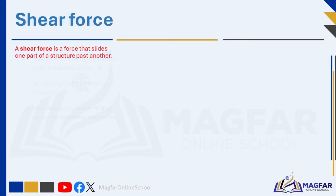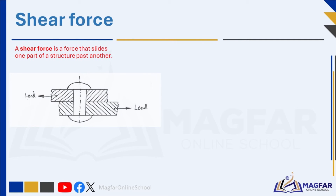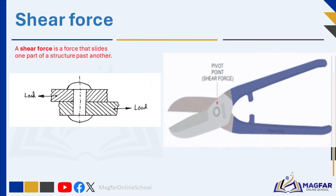A shear force is a force that slides one part of a structure past another. An example of shear force is forces acting parallel to a horizontal beam, trying to slide one part of the beam past another. If the weight on a hook is too heavy, the hook will break — it will fail due to a shear force. A shear force pulls a material in different directions, forcing one part of a structure to slide over or past another part.